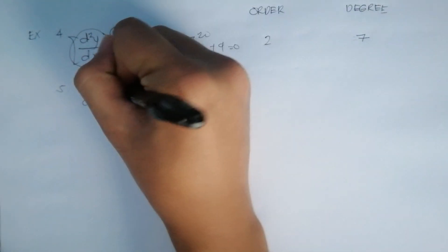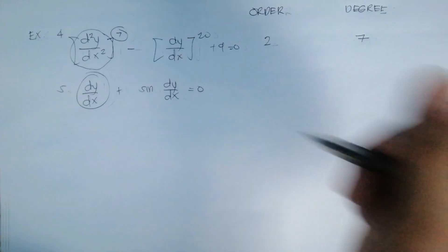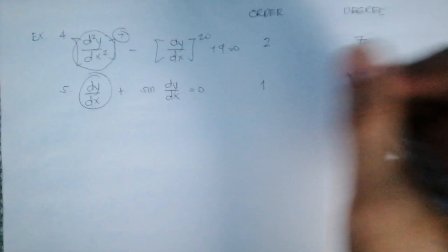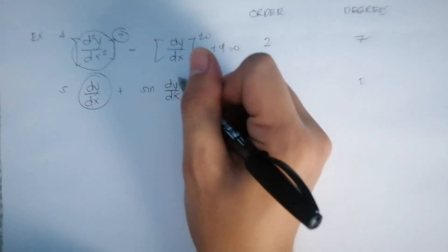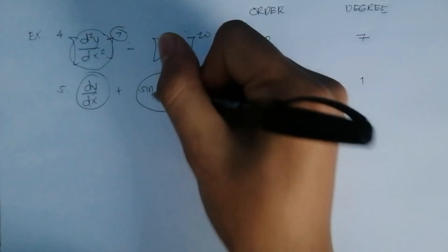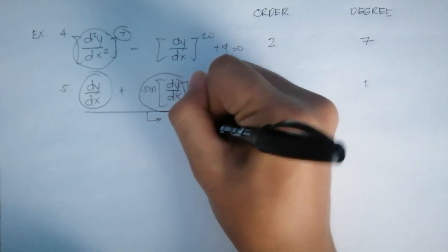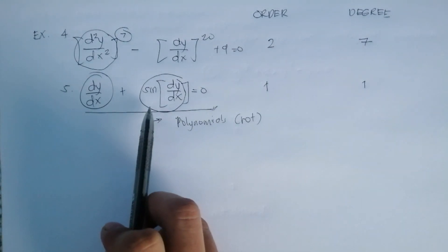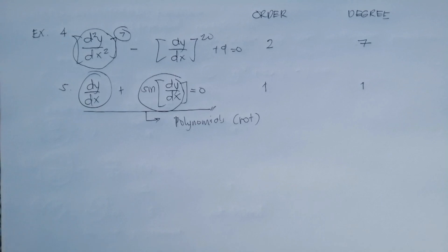For example number five, dy/dx + sin(dy/dx) = 0. It is first order since it has only first derivatives. However, the degree is not defined — wait, correction: it is not defined because sin(dy/dx) makes dy/dx a function inside a sine, which is not a polynomial in the derivative.